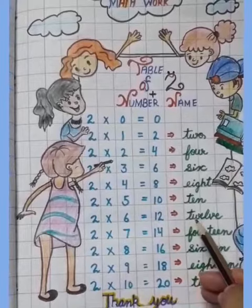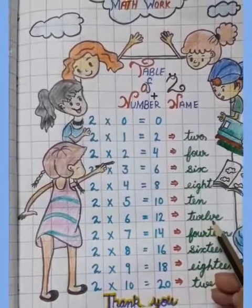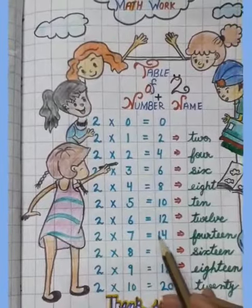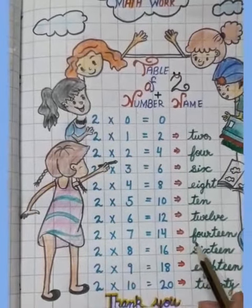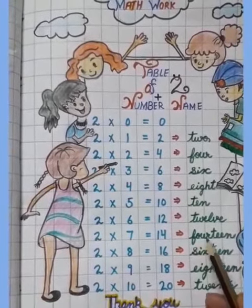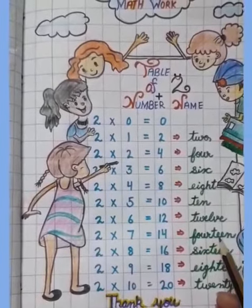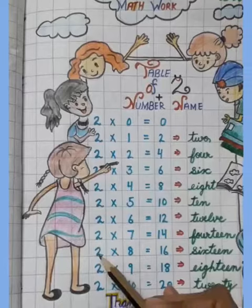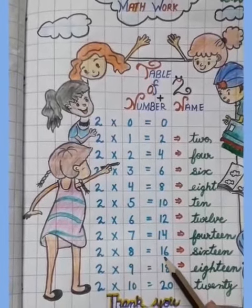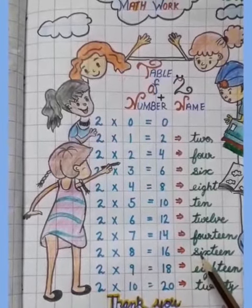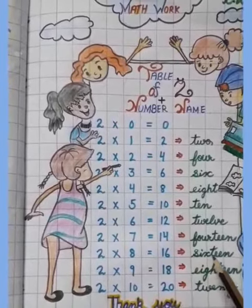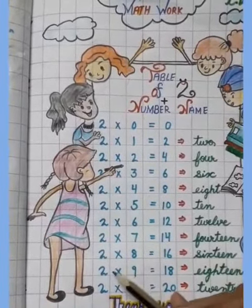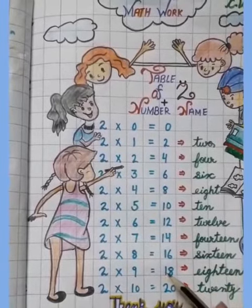2 sevens are 14, f-o-u-r-t-e-e-n, 14. 2 eights are 16, s-i-x-t-e-e-n, 16. 2 nines are 18.